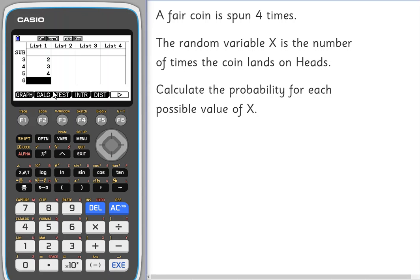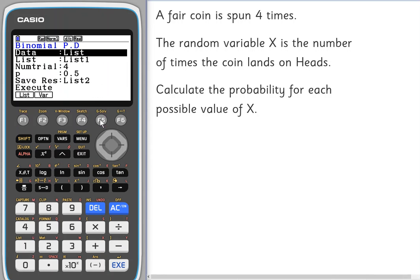Then as normal we'll calculate the binomial distribution by choosing F5 distribution, F5 again for binomial, and we're going to choose BPD. We're going to work out the individual probabilities for each one of these outcomes, not the cumulative one, so that's F1 BPD.